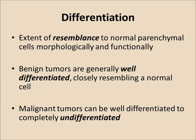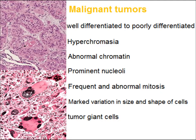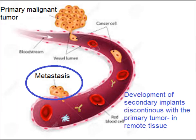Malignant tumors range from well-differentiated to poorly differentiated. Differentiation refers to the extent of resemblance to normal parenchymal cells, both morphologically and functionally. Microscopically they show hyperchromasia, abnormal chromatin, prominent nucleoli, frequent and abnormal mitosis, marked variation in size and shape — called pleomorphism — and tumor giant cells. They metastasize, developing secondary implants discontinuous with the primary tumor. Sarcomas prefer vascular metastasis and spread to the lungs.